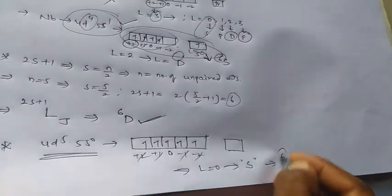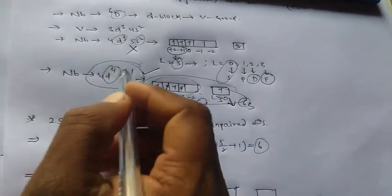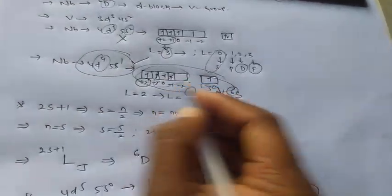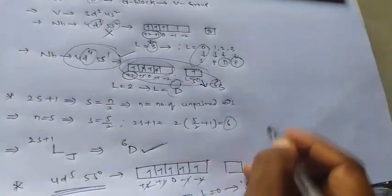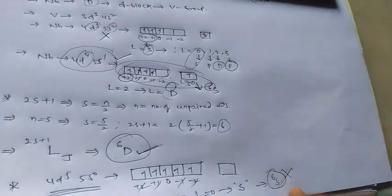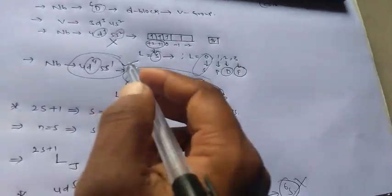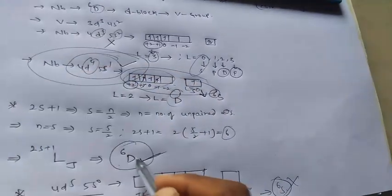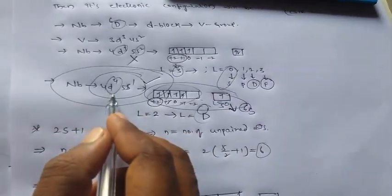And here S6. But we have given D6 term symbol, D6 term symbol for the problem. Hence this is not possible. So only one electronic configuration which is possible for given term symbol is 4D4, 5S1.